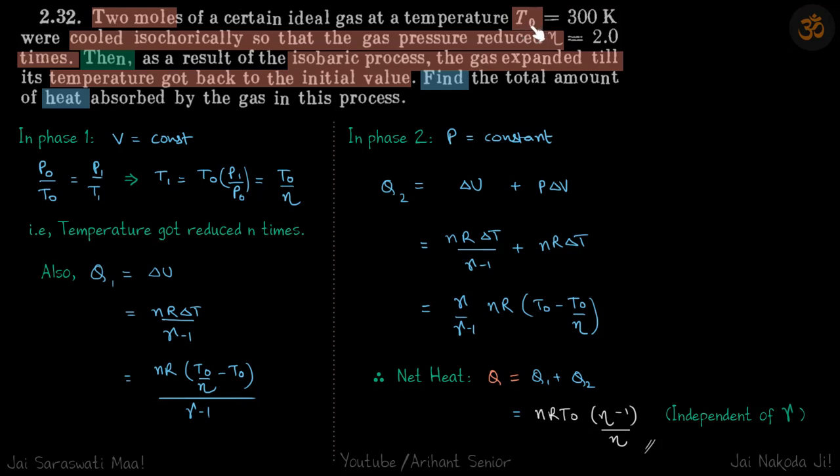And then we can find the value of Q. So to find the final temperature, we will use this: because the volume is constant, P0 by T0 is equal to P1 by T1. So T1 comes to be T0 into P1 by P0, and P1 by P0 is given as one by eta. It's given that pressure reduces eta times.